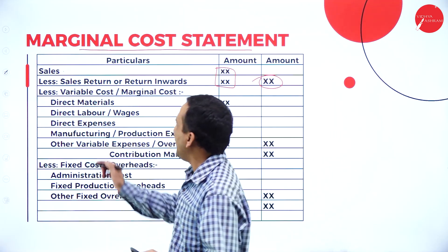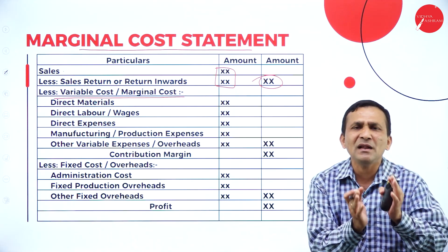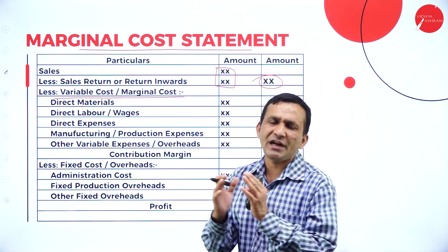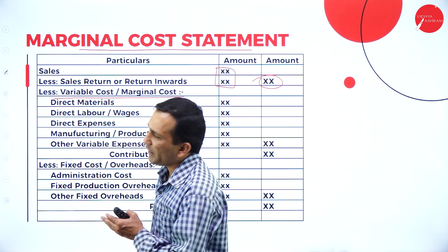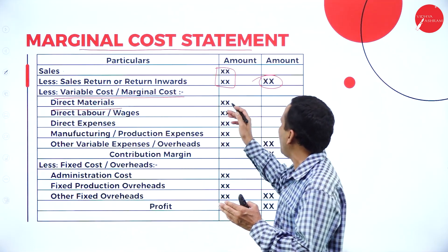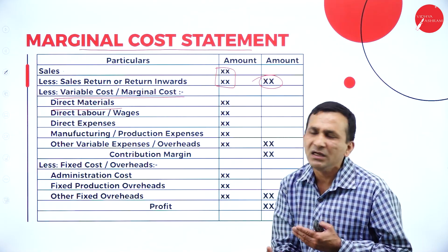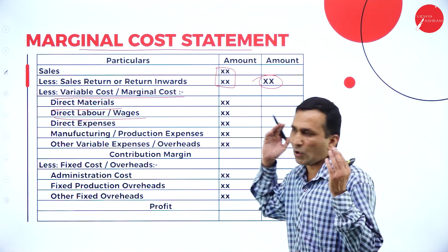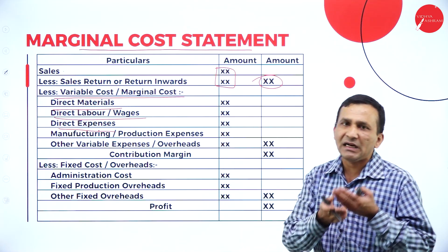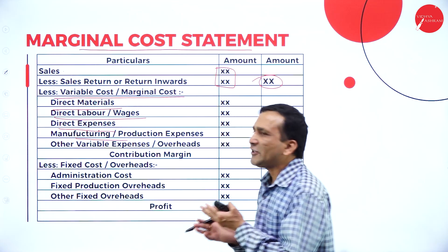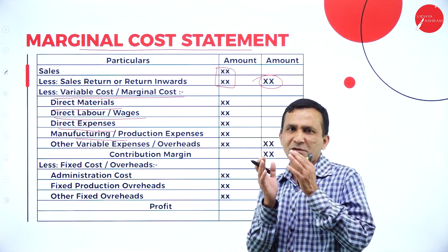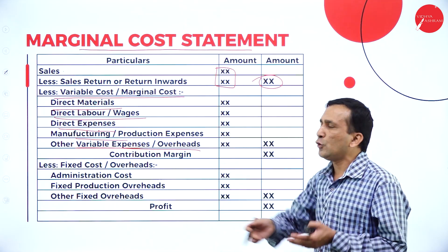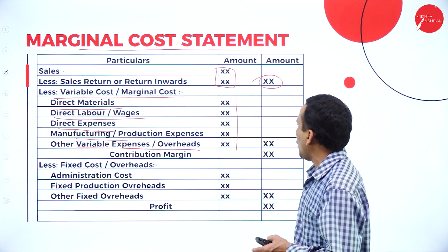After specifying sales, we need to subtract the variable cost or marginal cost — costs that keep varying, such as materials and labor. Direct materials, which vary, are written in the inner column if there are multiple items. Direct labor or wages given in the question goes in the inner column. Direct expenses, which are also variable, are written under variable items. Manufacturing or production-related variable expenses are also considered here. Other variable overheads are included, and the total is written in the outer column.